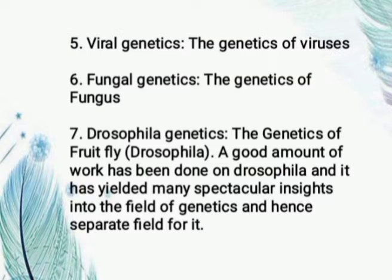Filamentous fungi are extensively used as model organisms for eukaryotic genetic research, including cell cycle regulation, chromatin structure, genetic recombination, and gene regulation. Also, Drosophila genetics covers the genetics of the fruit fly Drosophila. A good amount of work has been done on Drosophila and it has yielded many spectacular insights into the field of genetics, hence a separate field for it. Drosophila is an exceptionally useful genetic model used for the study of simple and complex behaviors, and its use has provided important insight into the molecular, cellular, and evolutionary underpinnings of behavior.